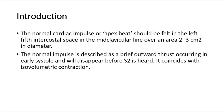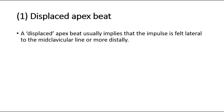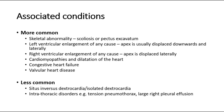It coincides with isovolumetric contraction. The first abnormality is the displaced apex beat. A displaced apex beat usually implies that the impulse is felt lateral to the midclavicular line or more distally. It is often associated with skeletal abnormalities such as scoliosis or pectus excavatum.